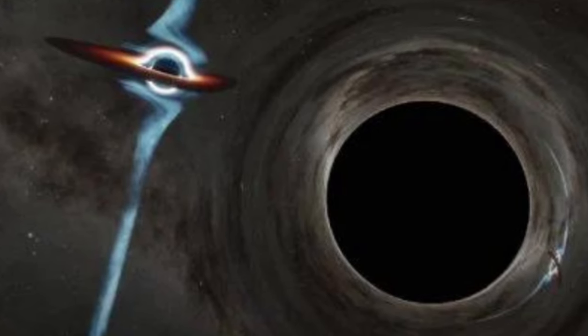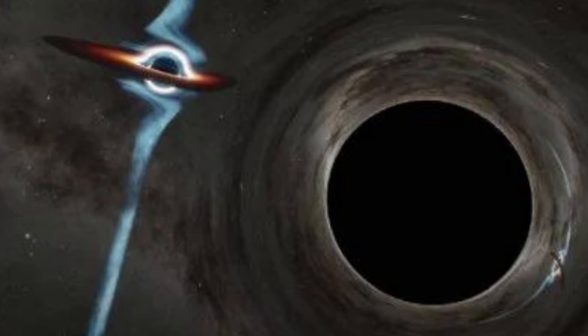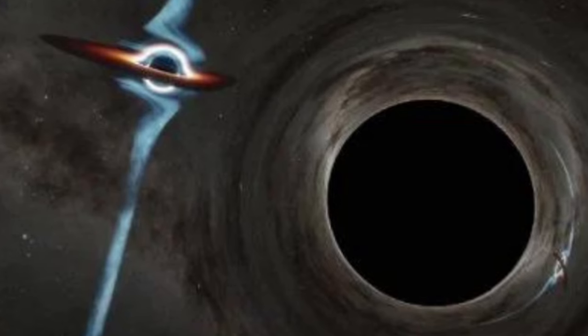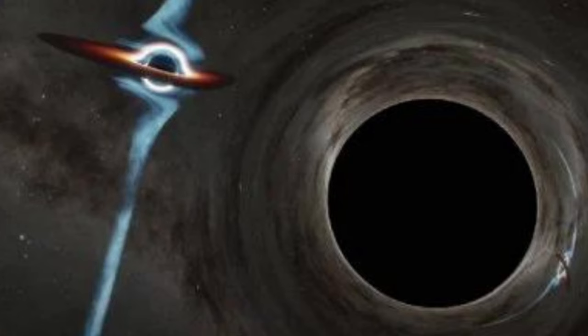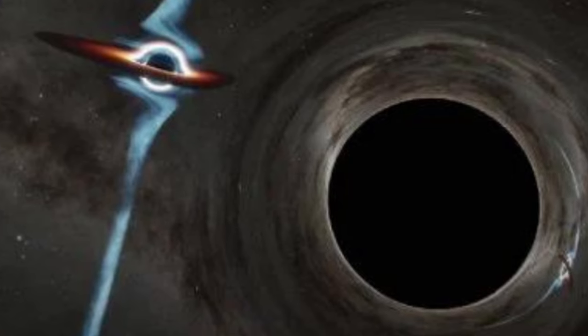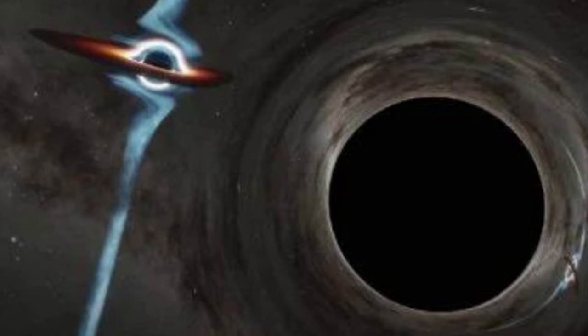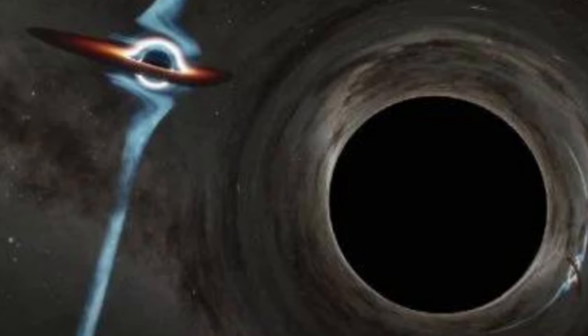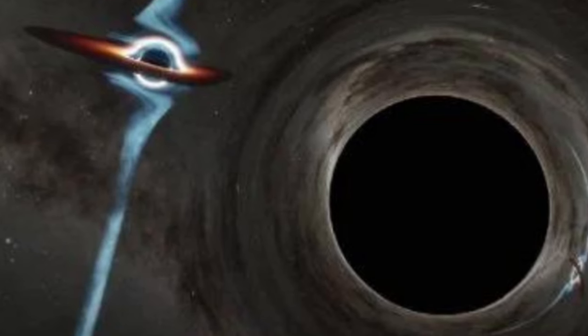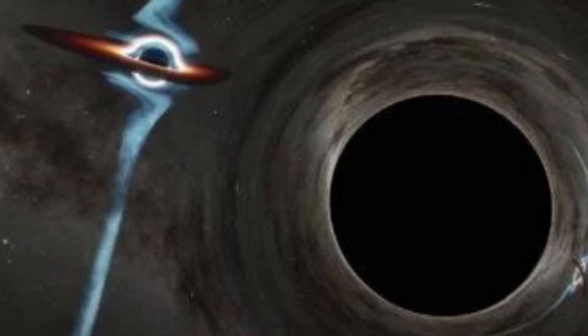Another similar system, OJ287, suggests that the interpretation is valid. This blazar has two close supermassive black holes orbiting each other every 12 years, at a separation of a third of a light year. It shows fluctuations in radio brightness too, albeit more irregularly, and without the sinusoidal waveform.